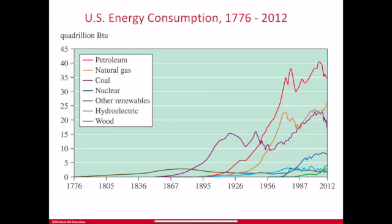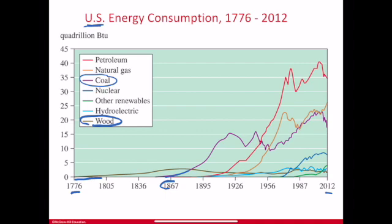Coal was one of the first fuels used. This graph shows energy consumption in the United States from 1776 to near-current. On the x-axis, the dark green line represents wood — burned for keeping homes warm and for cooking. Then the purple line represents coal, which started rising around the 1850s–1867, reflecting the realization that coal could yield more energy — more heat per mass — compared to wood.